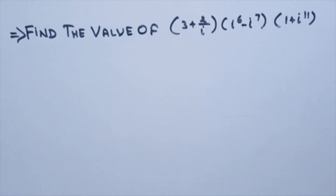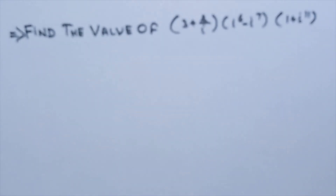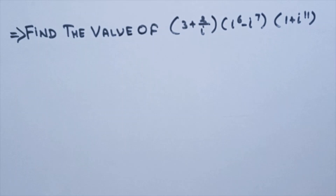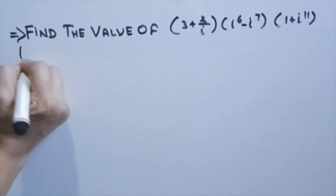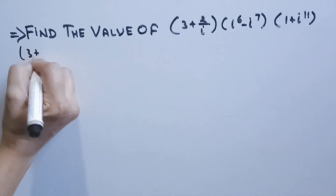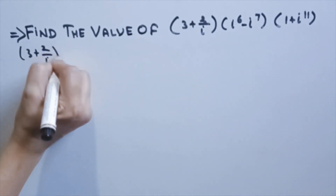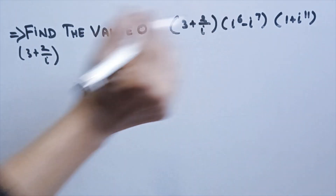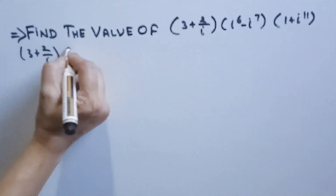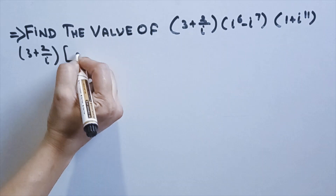Next, find the value of (3 + 2/i) multiplied by (i⁶ - i⁷) again multiplied by (1 + i¹¹). We need to find its value. So, (3 + 2/i): keep it as it is. Then in this term, i⁶ can be written as (i²)³.